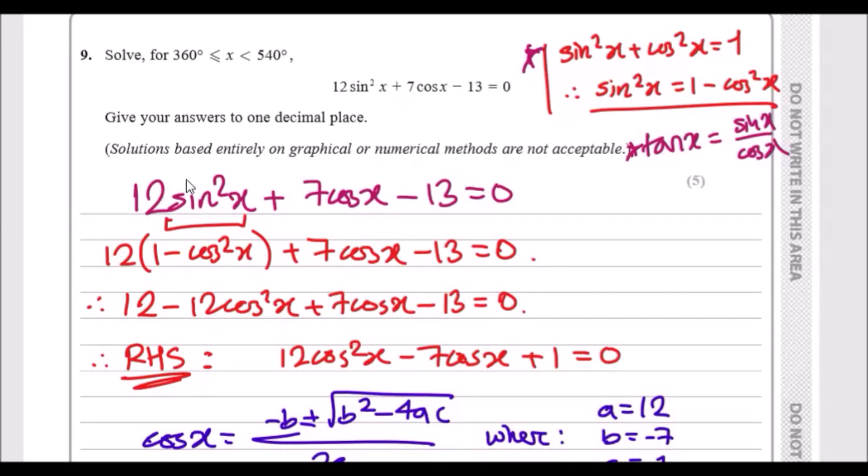Now when you look at the equation itself, the only way we can solve this is first you recognize that this one kind of looks like a quadratic equation, except that you have a sine and a cos.